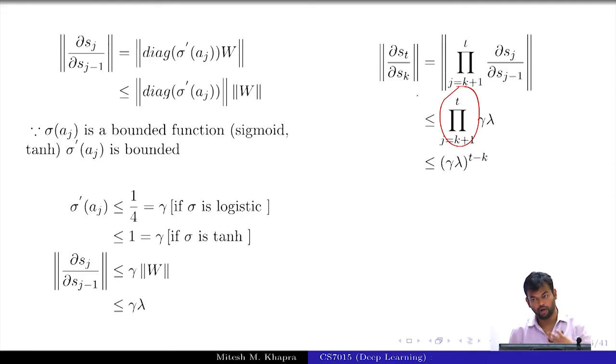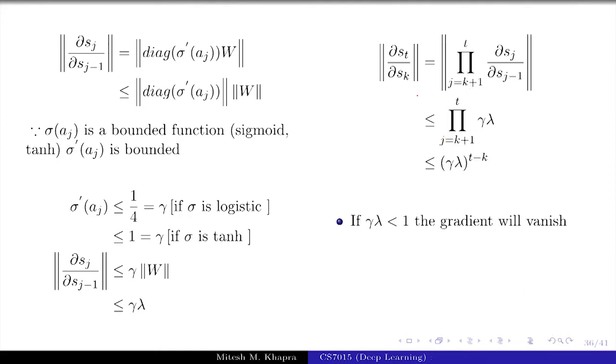Now, if gamma or lambda, or rather gamma into lambda, if it is greater than 1, what will happen? What will happen to this series? Explode. If it is less than 1? Vanish. It will vanish. So, you get that? So, that is why you have this vanishing and exploding gradients problem.